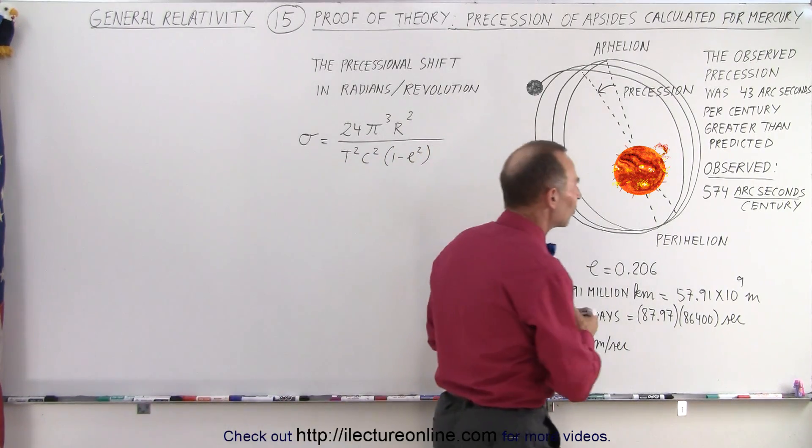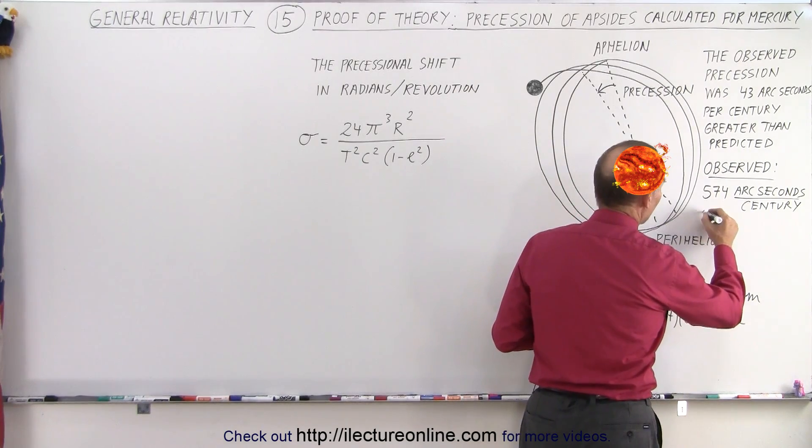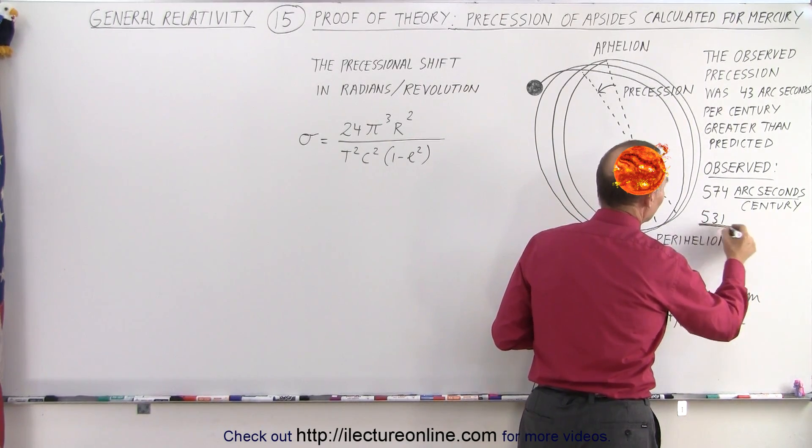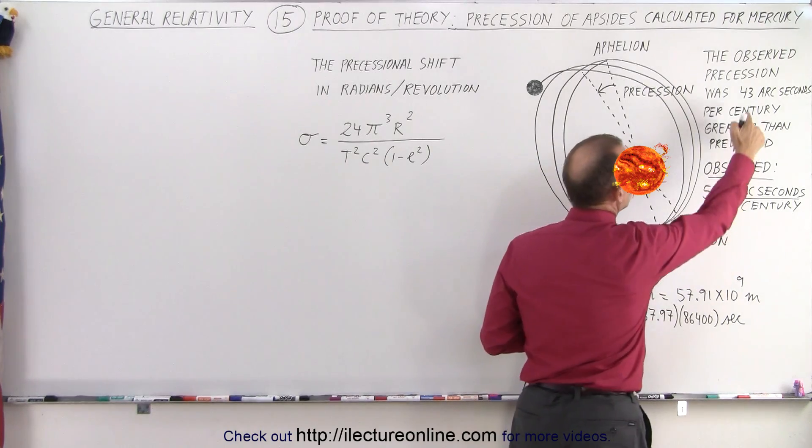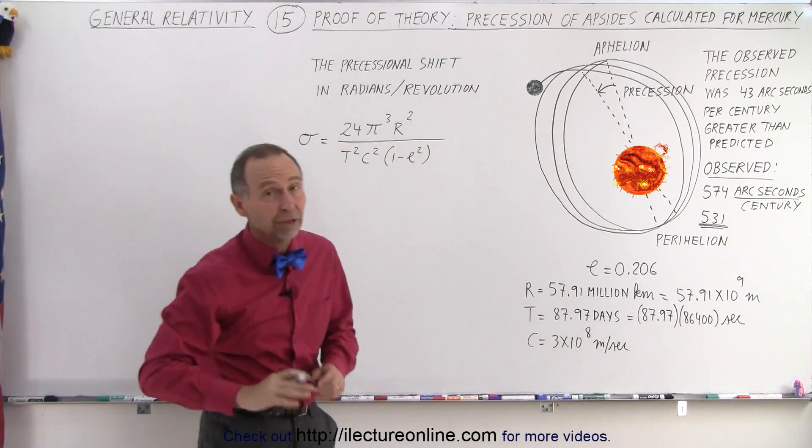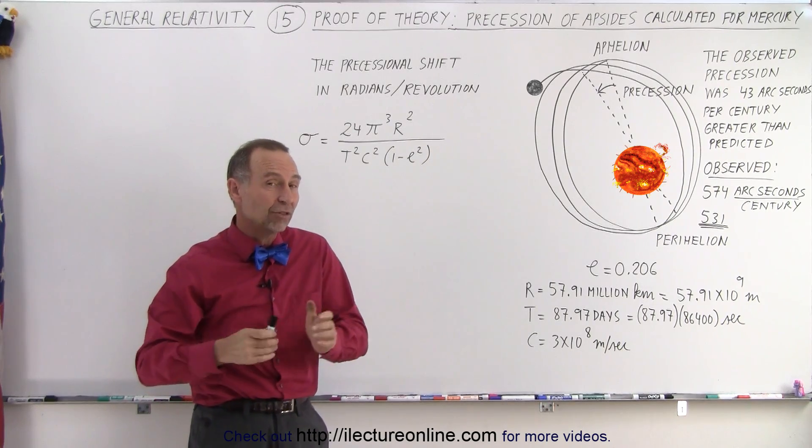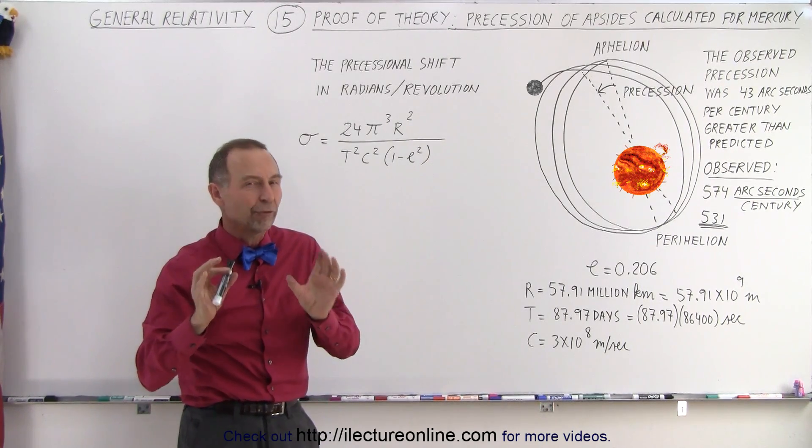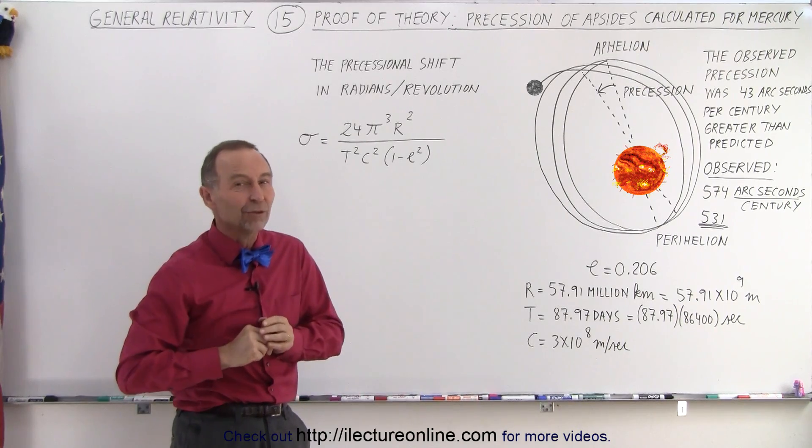It turns out they calculated something that was more along the lines of 531 arcseconds. This is what it should have been. There was an additional 43 arcseconds that they could not account for. And it turns out, when Einstein came up with his theory of general relativity, that that's where the 43 missing arcseconds went.